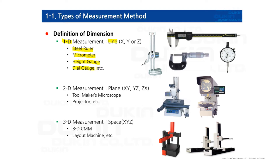And if you duplicate this straight line — that is first dimension — then put it together perpendicularly, it becomes the second dimension. It is a plane that has two degrees of freedom. For example, we can think of microscopes and projectors, etc. Finally, the third dimension: if the plane that is two-dimensional is duplicated and put together perpendicularly, it becomes the third dimension. It is a space with three degrees of freedom. For example, 3D coordinate measuring machines and layout machines, etc.